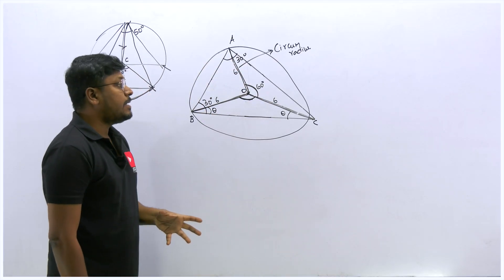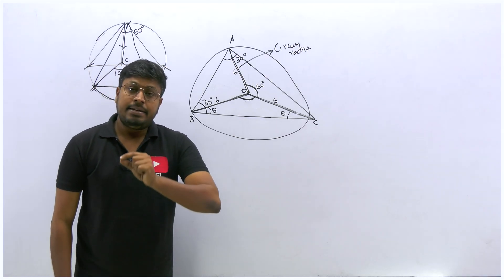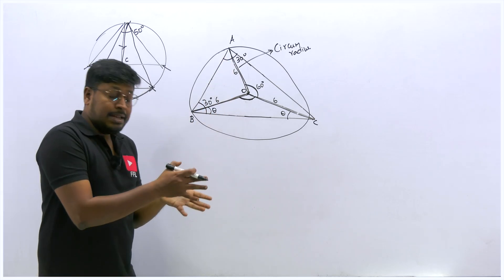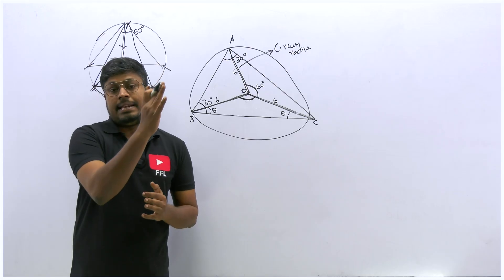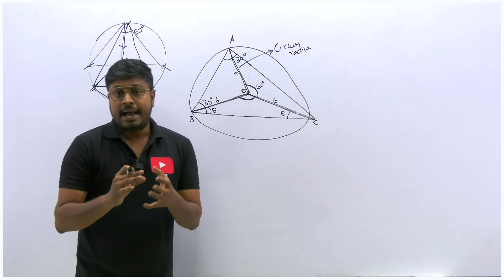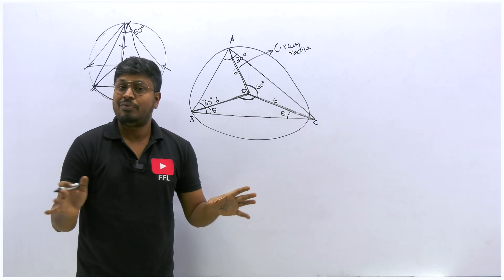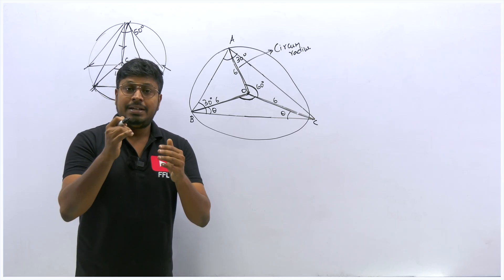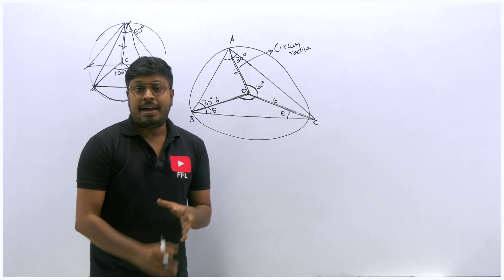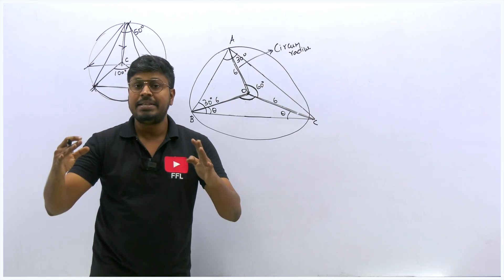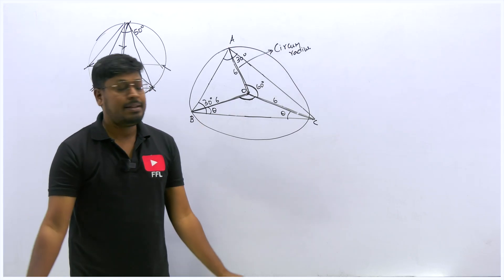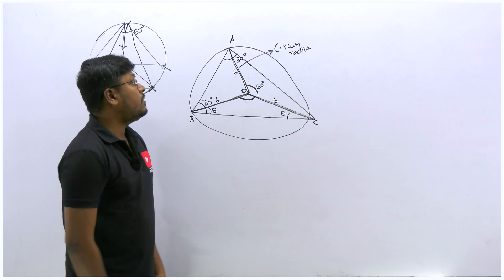To summarize the key properties: the lines connecting the circumcenter to all vertices are always equal in length—that length is the circumradius. The circumcenter angle always equals twice the opposite angle of the triangle. Drawing a circumcenter divides the triangle into three isosceles triangles because two sides of each smaller triangle are circumradii and hence equal, so the two base angles of each smaller triangle are also equal.